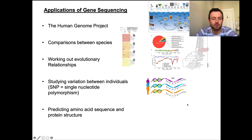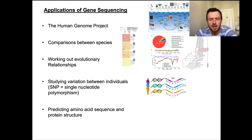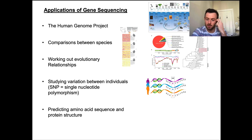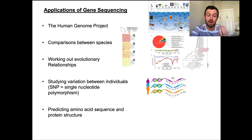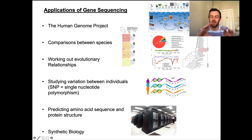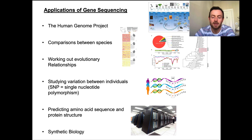Another application is predicting the amino acid sequence and protein structure using just the DNA sequence. If you have three letters of DNA — a codon, for example GCA — that codes for a certain amino acid. By reading the sequence of DNA letters, we can determine the sequence of amino acids within a protein. We can derive the primary structure fairly easily, but working out the actual 3D folded structure of a globular protein is very difficult.